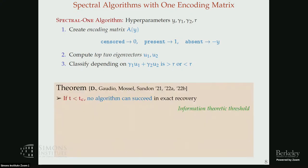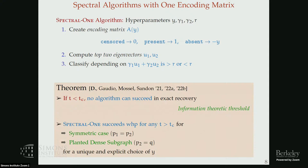Here is the first result. We find the information-theoretic threshold tc such that if t < tc, no algorithm can solve the exact recovery problem. On the other hand, if t > tc, in the symmetric case and the planted dense subgraph problem, Spectral-1 algorithms are optimal — they work up to the information-theoretic threshold. These two are cases of success for Spectral-1.